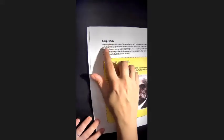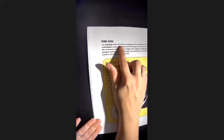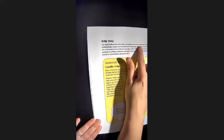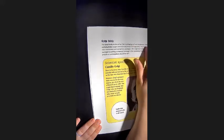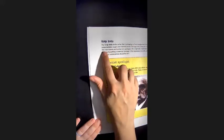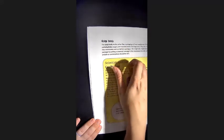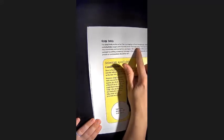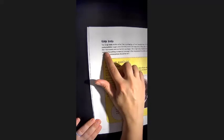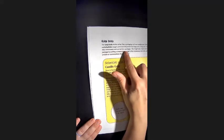Golgi body. The Golgi body works rather like a packaging unit and warehouse. Proteins and carbohydrates, sugars and starches, enter the Golgi body. They are covered in thin membranes and sorted into packages.